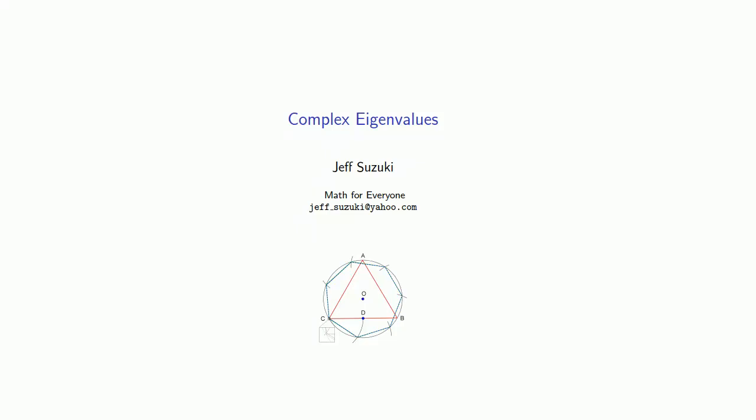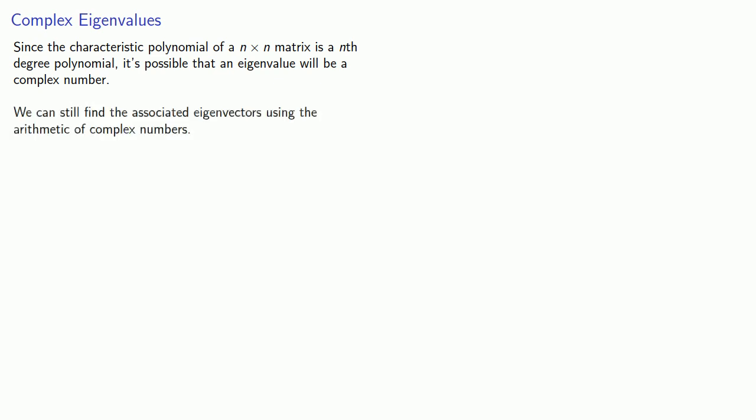Since our eigenvalues come from solving an equation, it's possible that some of those solutions might be complex numbers. In particular, since the characteristic polynomial of an n by n matrix is an nth degree polynomial, it's possible that an eigenvalue will be a complex number. We can still find the associated eigenvectors using the arithmetic of complex numbers.